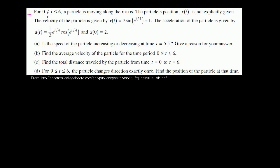Problem 1. For 0 ≤ t ≤ 6, a particle is moving along the x-axis. The particle's position x(t) is not explicitly given. The velocity of the particle is given by v(t) equal to the expression shown, and the acceleration a(t) is also given. They actually didn't have to give us the acceleration, because it's just the derivative of the velocity. They also tell us where we start off: x(0) = 2.